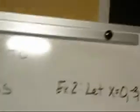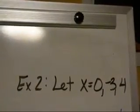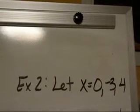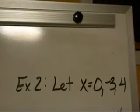Let's try another one. Example 2. This time, let's let the zeros be 0, negative 3, and 4. Again, I express that as x equals 0, negative 3, or 4.